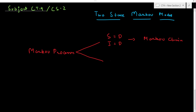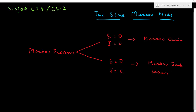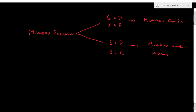The next type of process we will be discussing now is a Markov process with a discrete state space but a continuous time set. This is referred to as a Markov jump process. In this chapter we will be starting with Markov jump processes, which will be continued in the next two chapters — Chapter 5 and Chapter 6 of subject CT4.